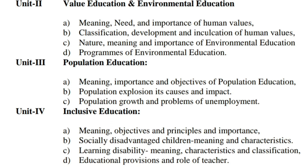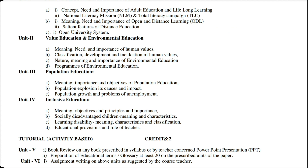Unit Third is Population Education. Topics include: (A) meaning, importance and objectives of population education; (B) its causes and impact; and (C) population growth and problems of unemployment. Unit Fourth is Inclusive Education. Topics include: (A) meaning, objectives, principles and importance of inclusive education; (B) socially disadvantaged children — meaning and characteristics; (C) learning disability — meaning, characteristics and classification; and (D) educational provisions and role of teacher.